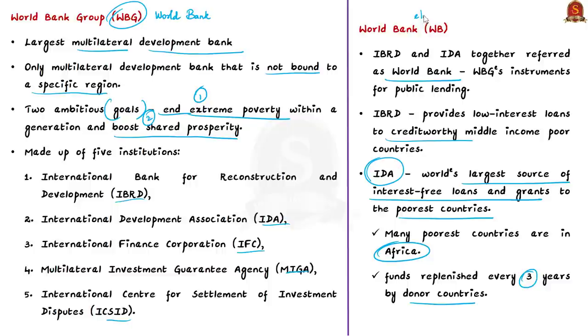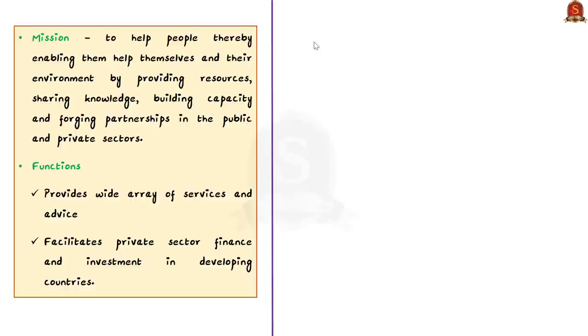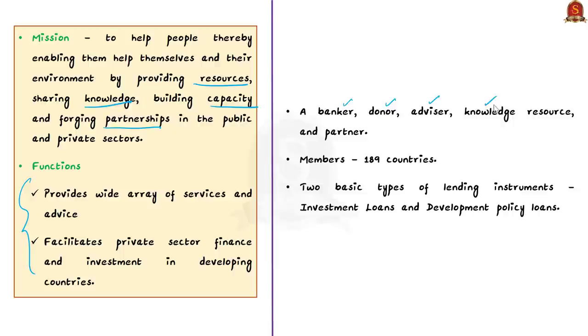The World Bank's mission is to help people so they help themselves and also the environment. This help is done by providing resources through sharing knowledge, building capacity, and forging partnerships in public and private sectors. It also provides services and advice and facilitates private sector finance and investment in developing countries. This World Bank plays many different as well as complementary roles like that of a banker, a donor, an advisor, a knowledge resource, as well as a partner. The World Bank has 189 countries as its members and offers two basic types of lending instruments: investment loans and development policy loans.